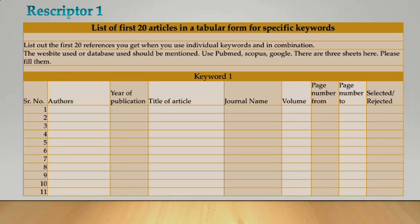This slide shows the Rescriptor 1, which is actually a list of articles that you got when you used specific keywords. For each keyword, one such sheet is prepared to have a minimum of 20 articles in the list. These 20 articles are the first hits you get when you use a database or a search engine. You can create separate sheets for individual keywords and for combination of keywords. The combination of keywords is used to check the redundancy of articles that appear in different databases and search engines, and this also assures that we do not miss out important articles.